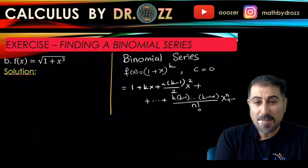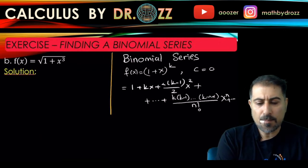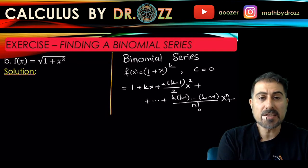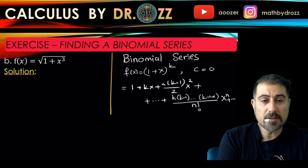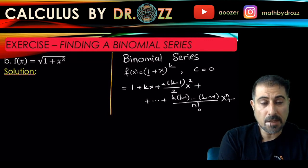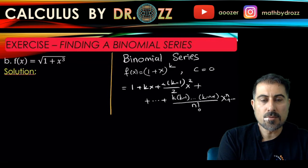Alright, so we're going to mimic the same idea that we had in part a. The binomial series of f(x) = (1 + x)^k centered at zero has the representation in this long form of polynomial. So to be able to use a binomial series and the corresponding expansion of that, we have to convert the given function into (1 + some function of x) raised to the power of k.